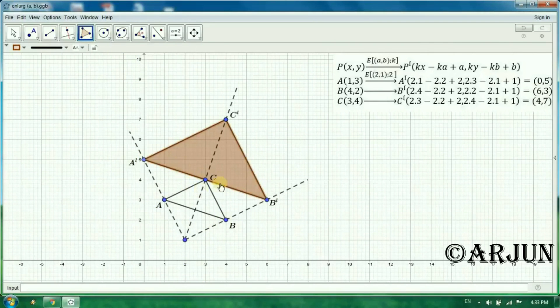This A, B, C is object and A prime, B prime, C prime is our image. And this is center (2,1) point. This is our center. Now join by dot line: center, object, and image.